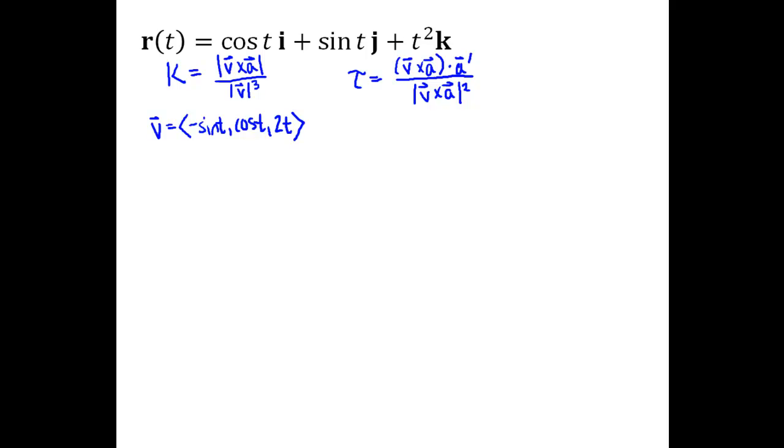The key thing about the smoothness of the parameterization is that this velocity vector should be continuous. All of these component functions are continuous everywhere for all values of t. The other important thing for smoothness is that the velocity vector should be not zero at any particular point. The easiest way to see that for this one is to notice that the sine and cosine functions in the i and j components are never zero for the same input. So we do have a smooth parameterization, so we are okay to use these formulas.